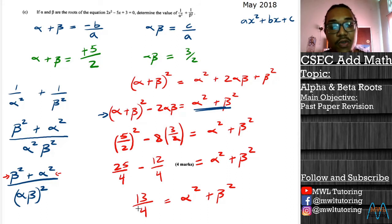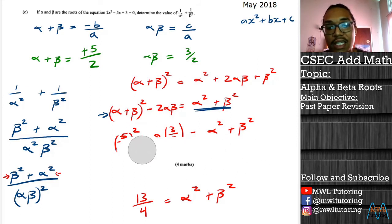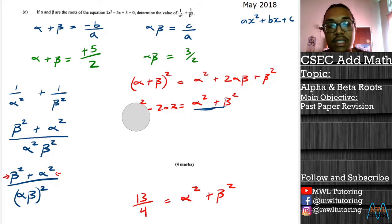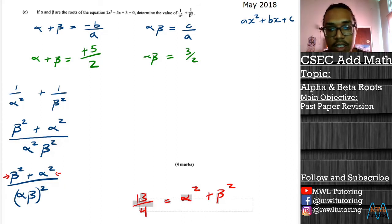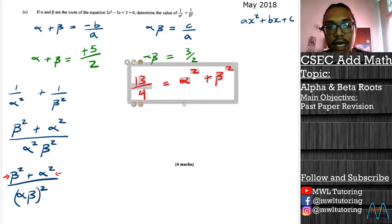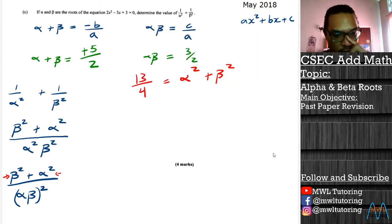So again, everything in red was to work out our numerator in blue at the bottom, and we finally worked out that numerator alpha squared plus beta squared to give us 13 over 4. Now that we have that 13 over 4 and the denominator of our fraction, we have the 3 over 2 to go inside the bracket, we could now work out our answer.